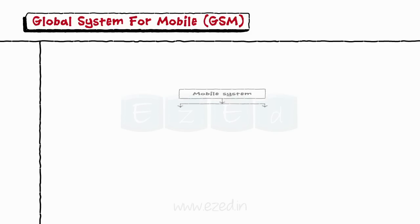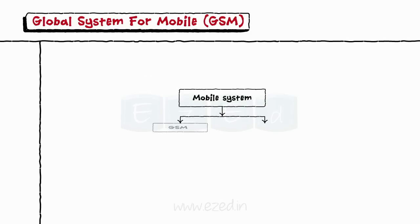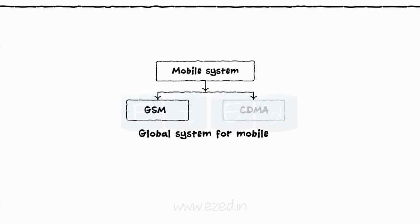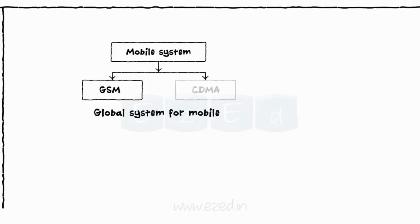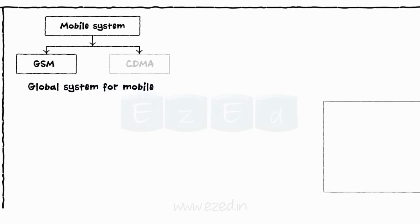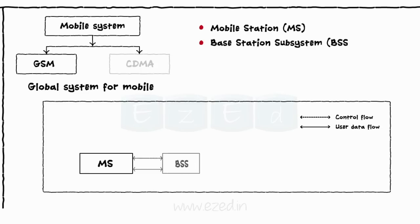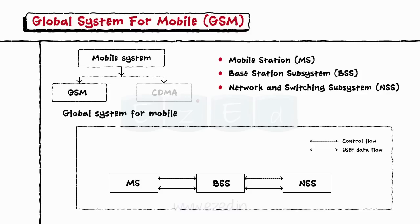We all know that there are two types of systems available: GSM and CDMA. We will only study the basics of the GSM system. GSM stands for Global System for Mobile. GSM is nothing but a big system made up of a few small systems such as Mobile Stations, Base Station Subsystem, Network and Switching Subsystem, and Operating Subsystems.